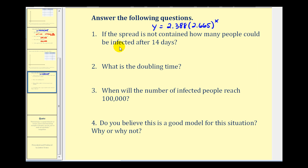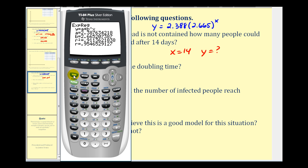First question is, if the spread is not contained how many people would be infected after 14 days? So they're asking us, when x is equal to 14, what would the y value be? Let's go ahead and enter this using the graphing calculator. Let's press second window. Notice our table will start at zero, increase by ones, and everything else is on automatic. So if we press second graph, we can just scroll down to x equals 14, and it will tell us the corresponding y value. This indicates it would be approximately 2.18 times 10 to the power of six.